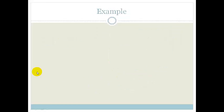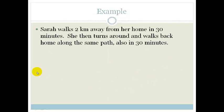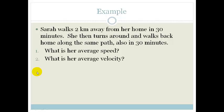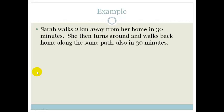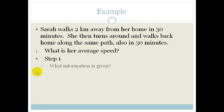So let's do an example and I'll show you how to use this. So Sarah walks 2 kilometers away from her home in 30 minutes. She then turns around and walks back home along the same path also in 30 minutes. And we want to know what is her average speed and what is her average velocity. She then turns around and walks back along the same path. And we want to know what is the information given.